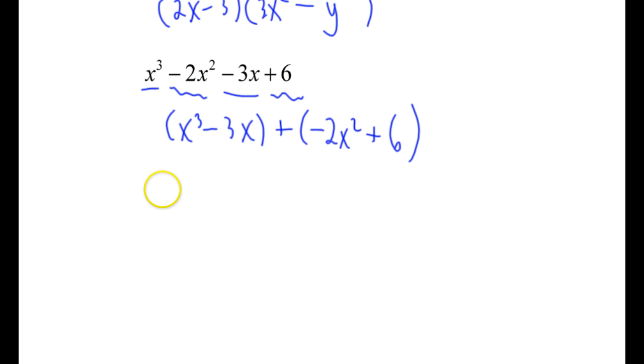Take out the GCF going this way, so you have x times x squared minus 3. Take out the GCF here, which is a negative because I don't want that leading coefficient positive, and then also 2. So minus 2 times x squared, that sign's going to change, minus 3.